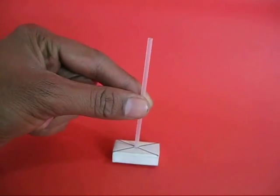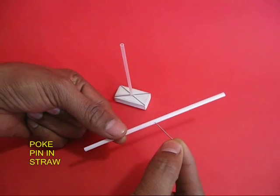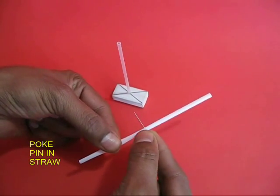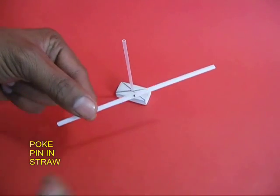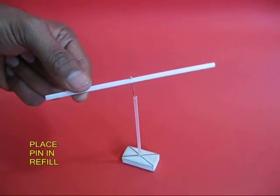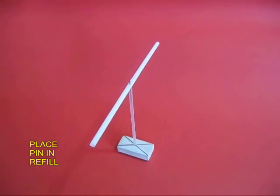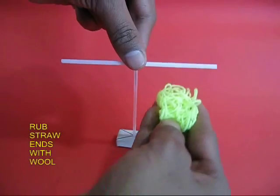Take a ball pen refill and stand it up on a rubber. Then take a pin and push it through the middle of a white straw. Place the pin in the refill so that the straw can rotate smoothly.